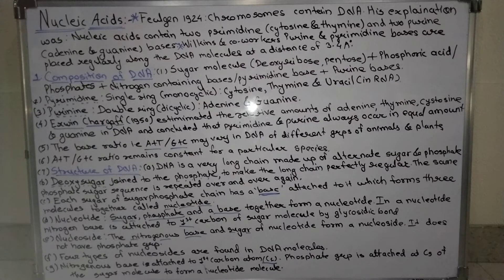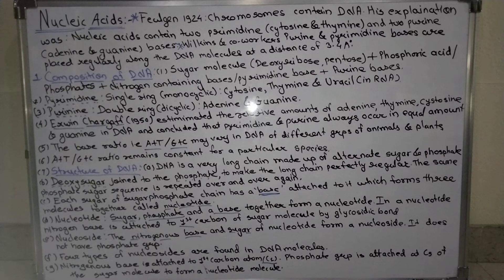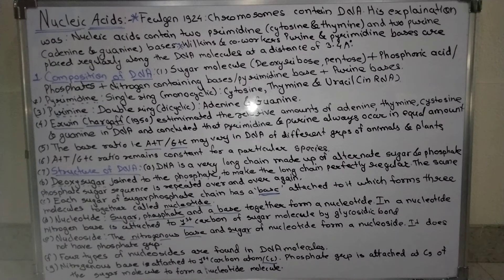Nucleic acids means the DNA and RNA, which we find in the cells as biomolecules. Swiss biochemist Frederick Miescher in 1869 discovered and isolated nucleic acid from cells. By 1938, it became evident that nucleic acids are of two types: deoxyribose nucleic acid (DNA) and ribose nucleic acid (RNA).